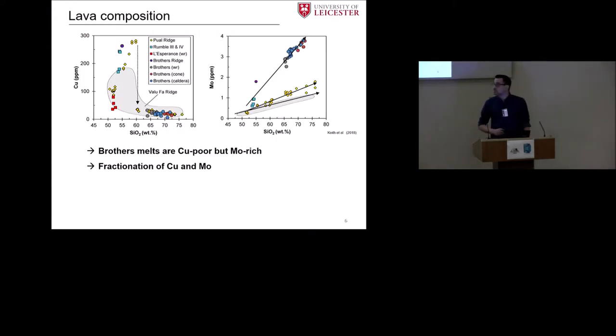When we look now on the lava chemistry, with a focus on metals, we see copper, moly against silica. Symbology stays the same throughout the talk, so I added data from Valu Fa Ridge, which is in the Lau Basin, Rumble 3 and 4, and Les Perrons are arc volcanoes from the same segment of the Kermadec arc as Brothers. All this data is glass data, except those two indicated by the WR for whole rock. And what we can see here is that the behavior of copper and moly is distinct. Brothers is very poor in copper here, but in contrast, moly is really high. So one of the questions is, what fractionates them? There must be a process which fractionates those two metals.